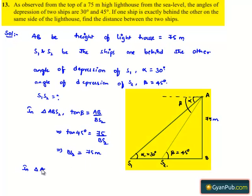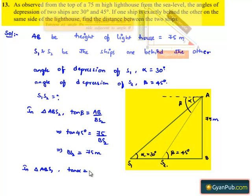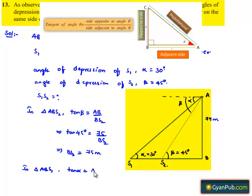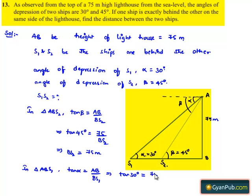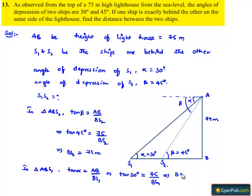Again, in triangle ABS1, tan alpha is equal to opposite side AB divided by adjacent side BS1, which implies tan 30 degrees is equal to 75 divided by BS1. That implies BS1 is equal to 75 by tan 30, that is 75 by 1 over root 3, which is 75 root 3.